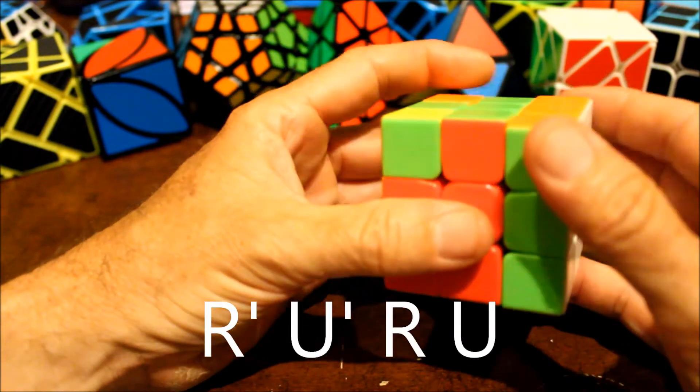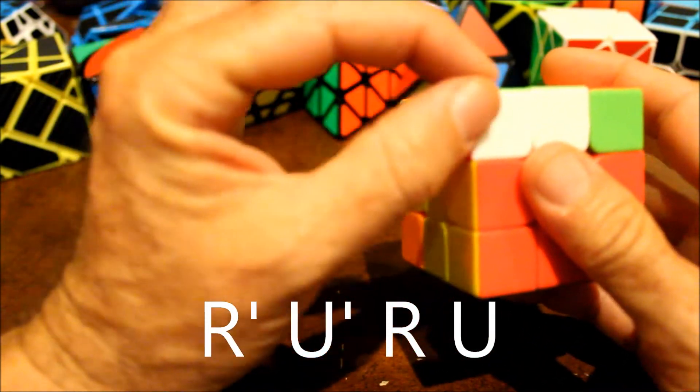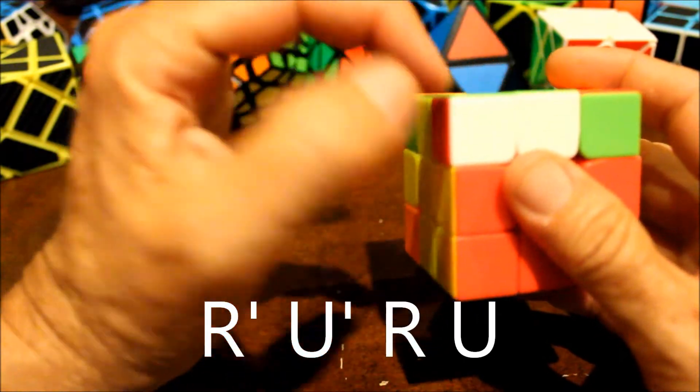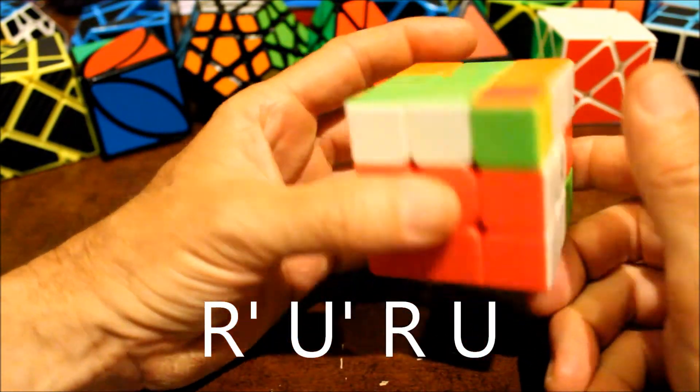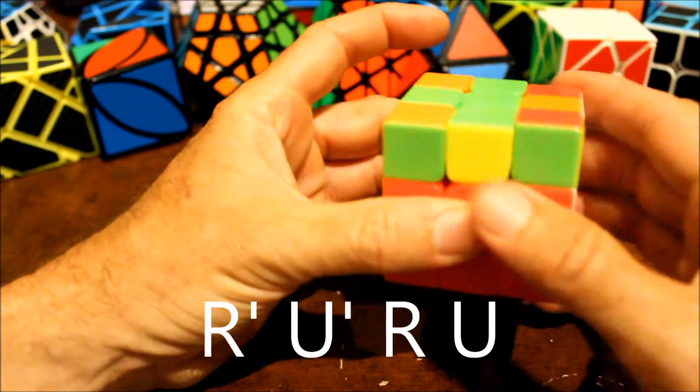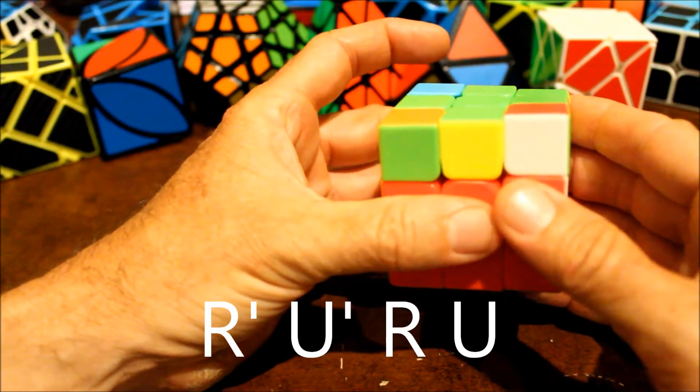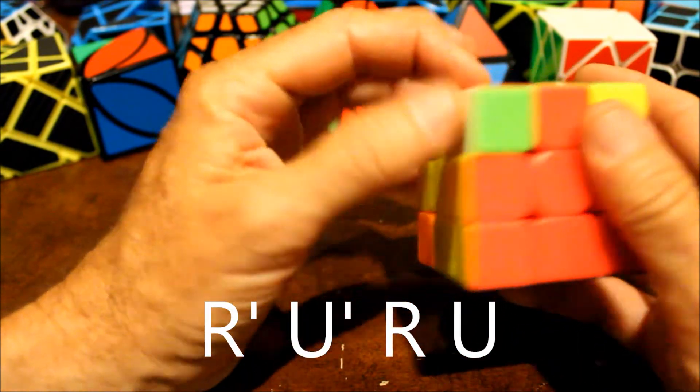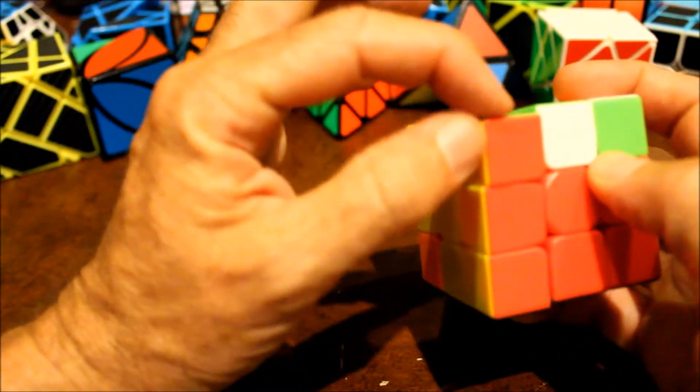Right prime, upper prime, right, up. And you keep doing that until this top left corner is right. It's not so let's do it again. Right prime, upper prime, right, up. Is it right? No. Let's do it again. Right prime, upper prime, right, up. Is it right? No. Right prime, upper prime, right, up. Is it right? Yes it is.